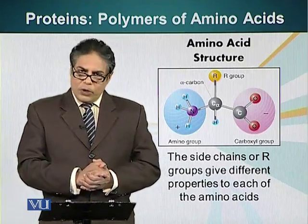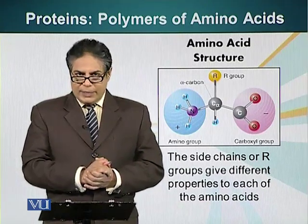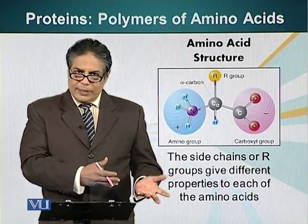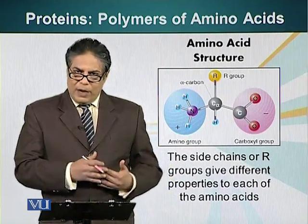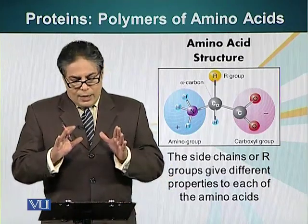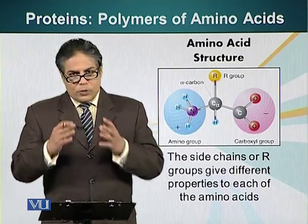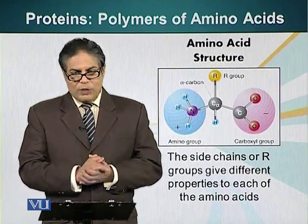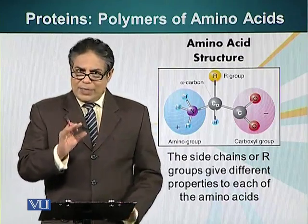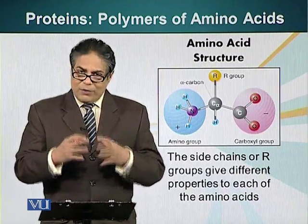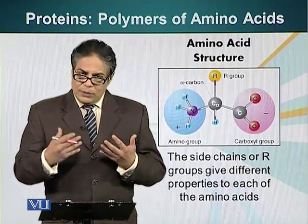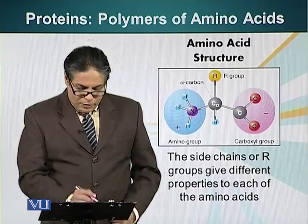We also know that there are 20 different amino acids that can make proteins. We will look at all these amino acids. However, I don't want students to memorize the structures of these amino acids — please just pay attention to the basic concepts and the basic nature of these amino acids. We are going to divide these amino acids into different groups.